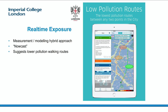We can take these models and combine them with our measurement networks to produce a real-time model. This is what we call the Nowcast, and it's been converted into an app that people can look up. This one's sponsored by the City of London — if they want to travel across the City of London, they can find the lowest pollution route they can follow. So by understanding exposure across the environment, we can reduce people's exposure.